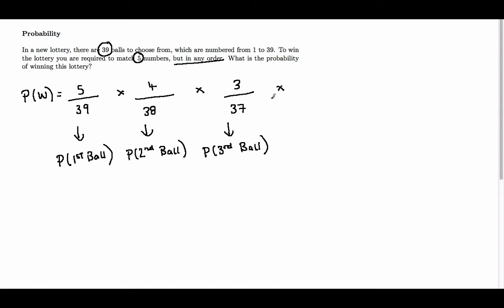Then the fourth ball - we've only got two balls left that we can match, so that's 2. And there are 36 balls left in the pot, so this is the probability of the fourth ball.